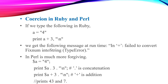In Ruby, type checking is very strict — variable type declarations must be correct, otherwise an error occurs. For example: a equals '4'. If you have a string and then print a plus 3, the type conversion fails. The result is an error: 'fail to convert fixnum into string.' This is a type error.